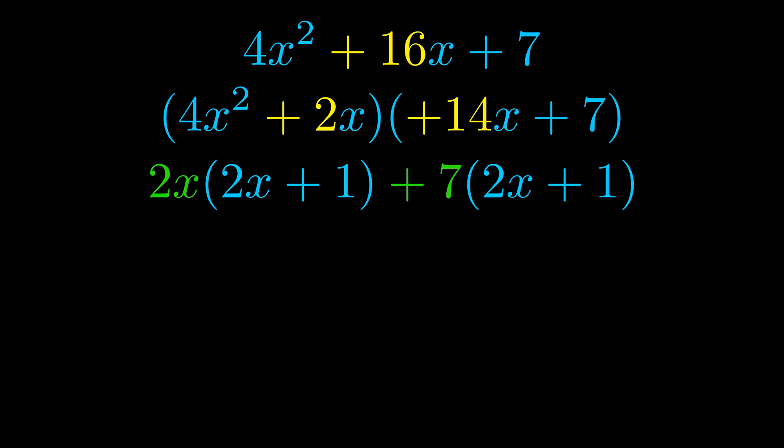Notice also how what remains inside of the parentheses is the same in both cases. The blue values are the same. Those blue values will become one of our factors and we will combine the two green values, the GCFs that we pulled out, to get the other one. And that is our fully factored equation.